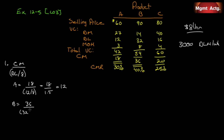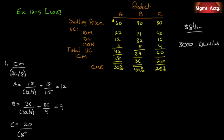Product B: contribution margin is thirty-six dollars, labor cost is thirty-two dollars. Thirty-two divided by eight gives us four hours. Thirty-six divided by four is nine — product B provides nine dollars of contribution margin per hour worked. Product C: contribution margin is twenty dollars, labor cost is sixteen dollars. Sixteen divided by eight gives two hours. Twenty divided by two is ten dollars of contribution margin per hour worked.